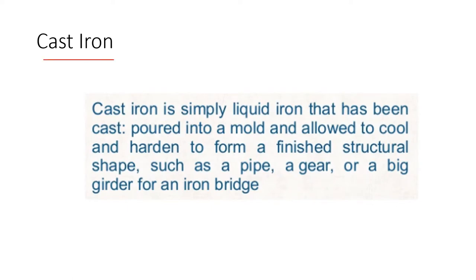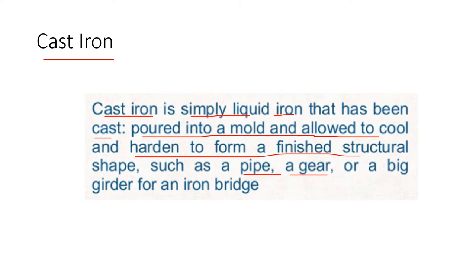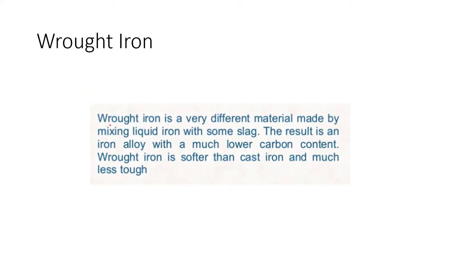What is cast iron? Cast iron is simply liquid iron that has been cast, poured into a mold, and allowed to cool and harden to form a finished structure of a natural shape such as a pipe, gear, or a big girder for an iron bridge. What is wrought iron? Wrought iron is a very different material made by mixing liquid iron with some slag, resulting in an iron alloy with a much lower carbon content. Wrought iron is softer than cast iron and much less stiff.